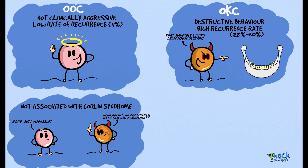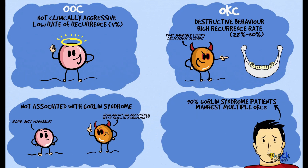Another distinction between the two cysts is the non-association of ortho-keratinized odontogenic cyst with nevoid basal cell carcinoma syndrome, otherwise called Gorlin syndrome. At least 90% of patients with Gorlin syndrome manifest with multiple odontogenic keratocysts. However, there have not been records of any association of ortho-keratinized odontogenic cysts with Gorlin syndrome.